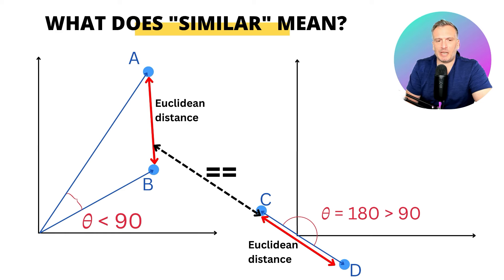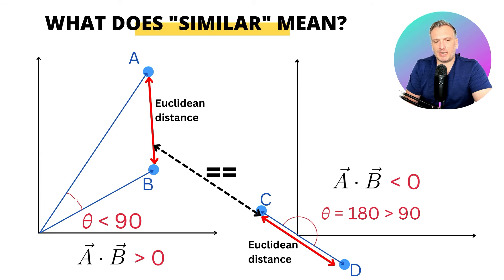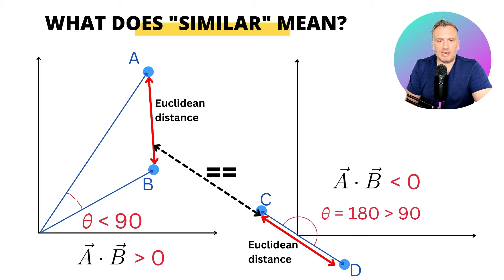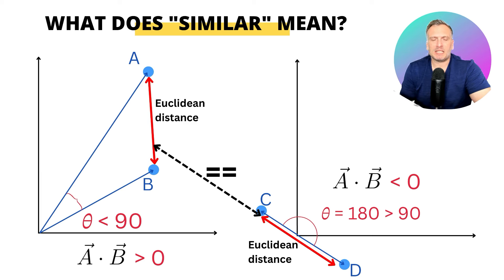On the left, with A and B, we have an angle that is less than 90 degrees, while on the right, with C and D, we have an angle that is equal to 180 degrees. The cosine of an angle smaller than 90 degrees is going to be positive, and the cosine of an angle greater than 90 degrees is going to be negative. So the dot product on the left is positive and the dot product on the right is negative. In terms of similarity, the dot product looks at A and B as being very similar, where C and D are very dissimilar.